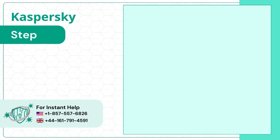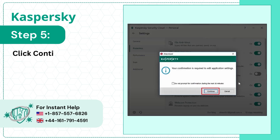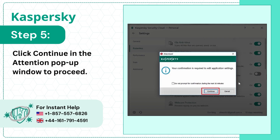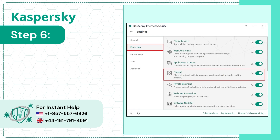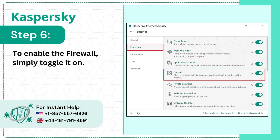Step 5: Click Continue in the Attention pop-up window to proceed. Step 6: To enable the firewall, simply toggle it on.